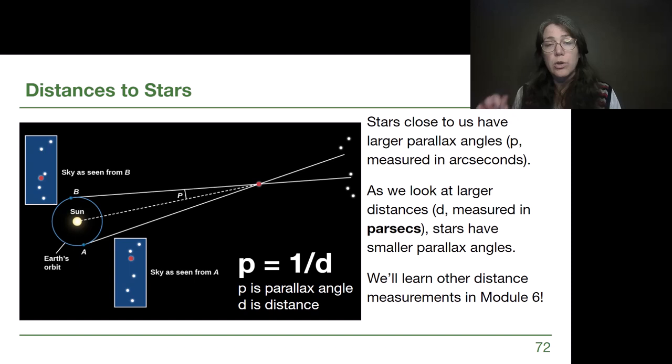The equation ends up looking quite simple: p equals one over d, because astronomers have taken out all of the complicated constants that might show up in it by defining a brand new unit for the distances used here, a distance measured in parsecs. That term comes from parallax and arc seconds, so they squash it together parsecs. The parallax angle is measured in arc seconds, that's a small fraction of a degree, and the distance is measured in parsecs, where one parsec is about three and a little bit light years. So the distance to the nearest star is about four light years or 1.3 parsecs.